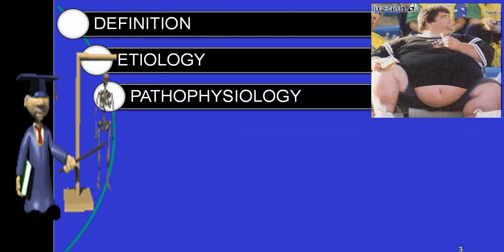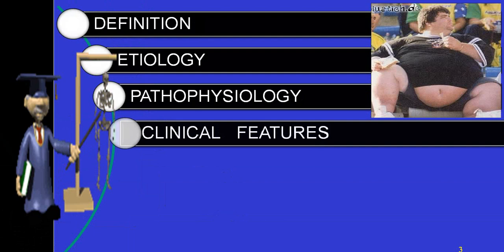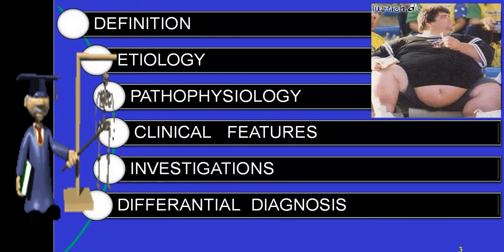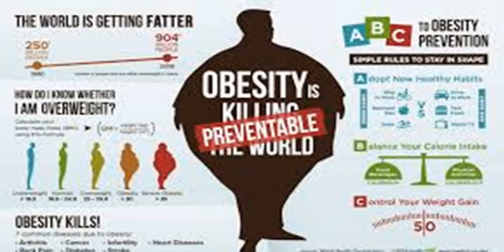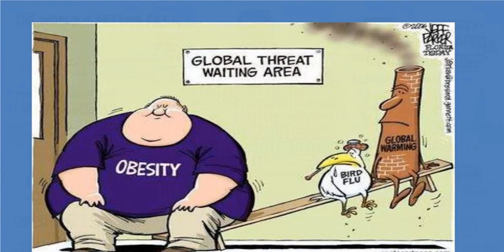We'll cover definition, etiology, pathophysiology, clinical features, investigations, differential diagnosis, treatment, and complications. At present, obesity is considered an epidemic and is killing the world. Yes, it is preventable. There are a lot of different phrases being used — obesity kills, obesity prevention, the world is getting fatter, it is called 'globesity,' a global threat.